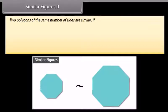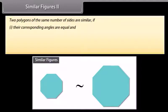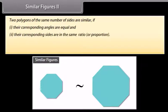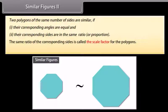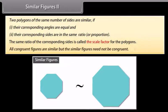Two polygons of the same number of sides are similar if: one, their corresponding angles are equal, and two, their corresponding sides are in the same ratio or proportion. The same ratio of the corresponding sides is called the scale factor for the polygons. All congruent figures are similar but the similar figures need not be congruent.